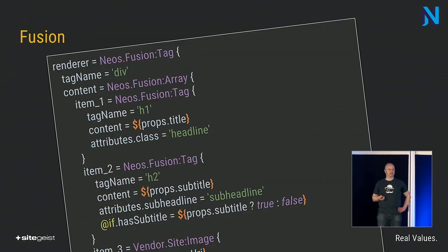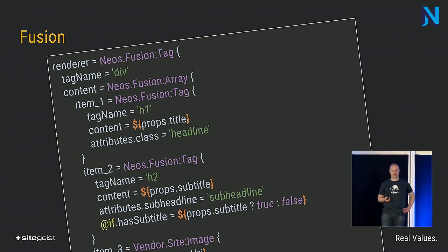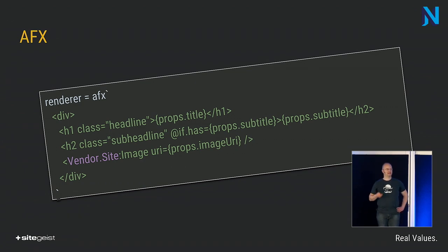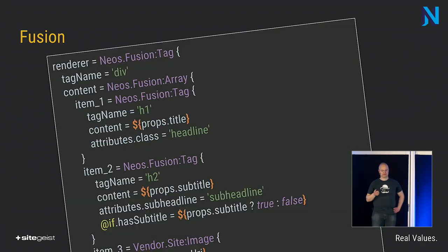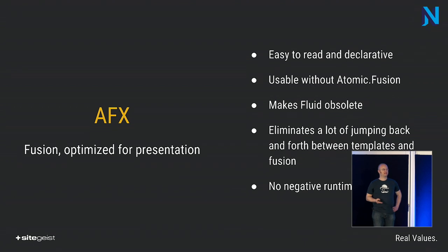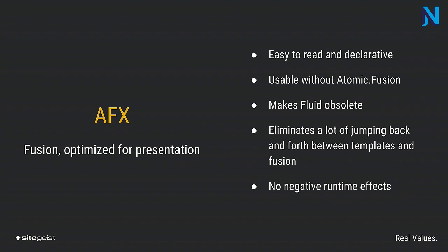Internally, AFX is transpiled into Fusion code. After the transpiling, the resulting Fusion code is parsed, cached, and whenever a request hits the server, it's evaluated. So AFX is Fusion — internally it is the same. It's just better readable for presentational code. There is no difference. AFX is strictly optimized for writing the rendering side of your code to be as easy and declarative as possible. While Fusion already is declarative, it was not that readable for rendering code before AFX.